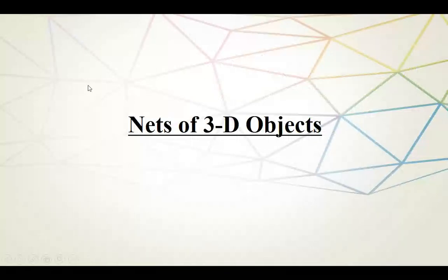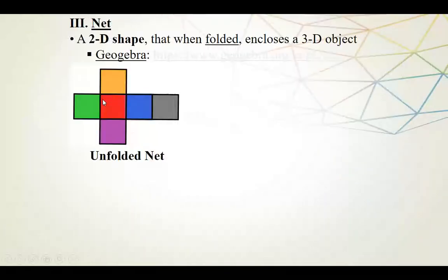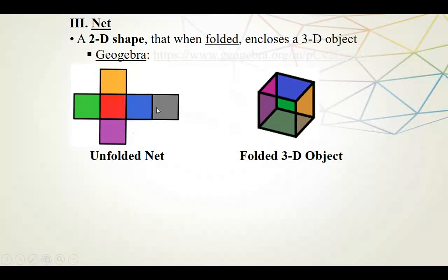Let's go back to the PowerPoint. So the unfolded net is made up of six squares, and when you fold all those together, you end up getting a three-dimensional object — a cube.